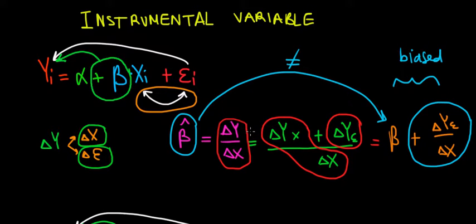Recall where we stopped in the previous video. We said that the slope coefficient is biased because we're missing this effect from x on y due to the omitted variable that happens in the error term.